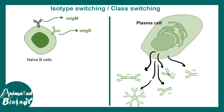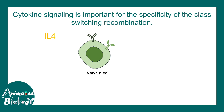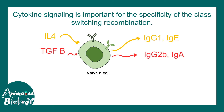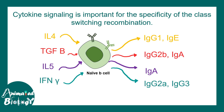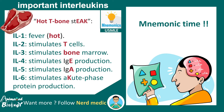The trigger for class switching — which isotype is generated — is dictated by cytokines. If IL-4 stimulates a naive B cell, class switching generates IgG1 or IgE. If TGF-beta stimulates it, IgG2B or IgA is produced. If IL-5 stimulates, IgA is produced. If interferon gamma stimulates, IgG2A or IgG3 is produced. Different polarizing cytokines give rise to different class switching responses and different antibody isotypes.